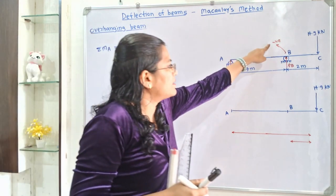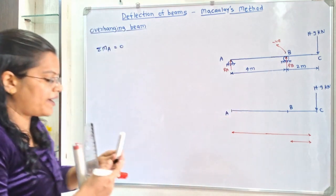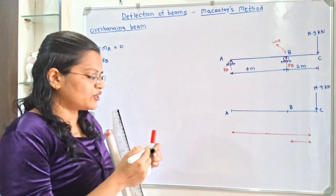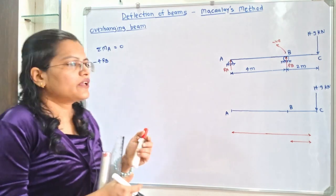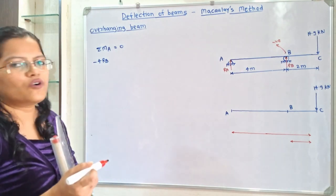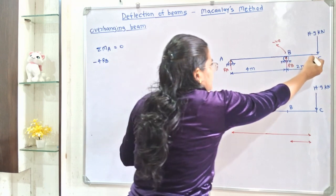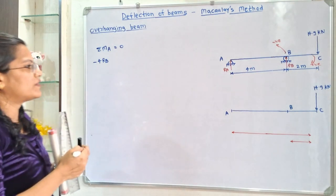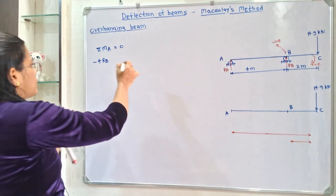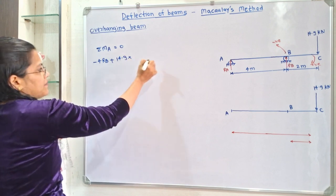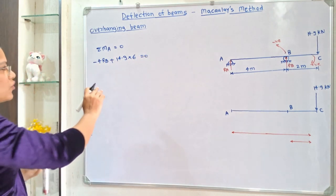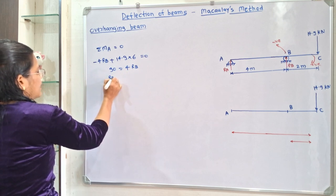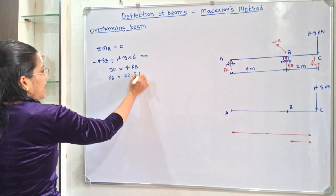So we write: minus RB multiplied by the distance, that is minus 4RB. The next load is 14.9 kilonewton. Moving the compass in the direction of 14.9 kilonewton about center A gives a clockwise direction, so we use a positive sign: plus 14.9 multiplied by total distance 4 plus 2, that is 14.9 multiplied by 6, equal to 0. Solving gives RB equal to 22.5 kilonewton.